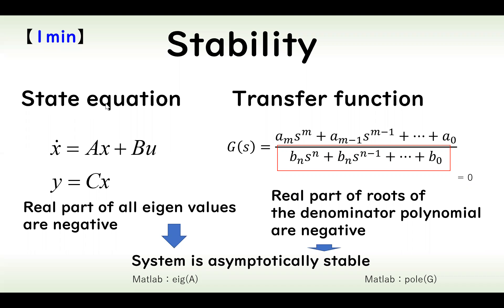In state equation, if the real part of all eigenvalues of A are negative, then the system is asymptotically stable.